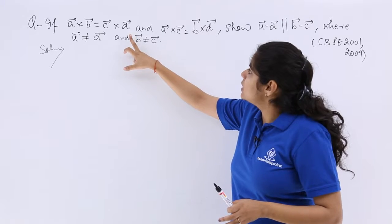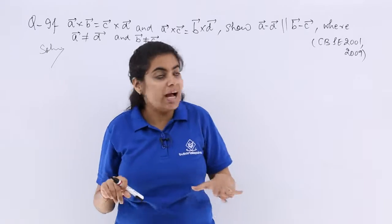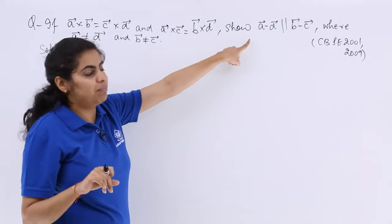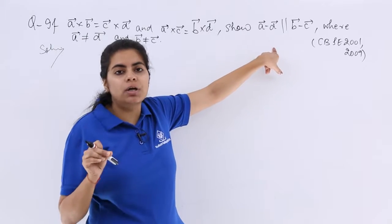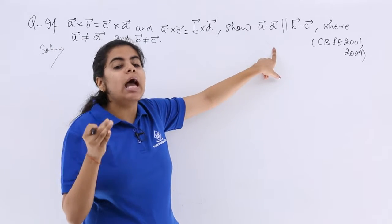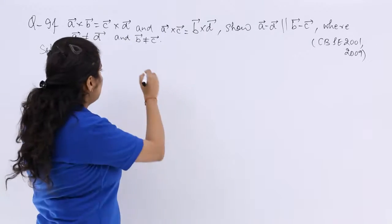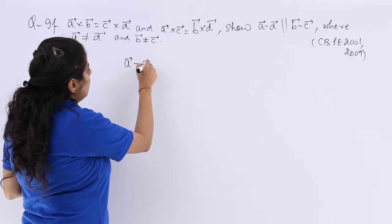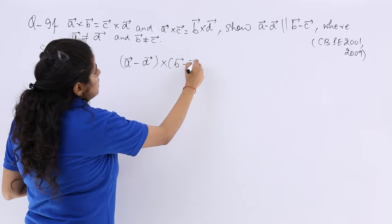A⃗×B⃗ is equal to C⃗×D⃗, A⃗×C⃗ is equal to B⃗×D⃗. We have to show something regarding the parallelity. So for parallelity, definitely the cross product should be 0 because the angle with sine is involved and sine 0 is only 0. So I am supposed to find out (A⃗-D⃗)×(B⃗-C⃗).